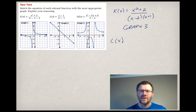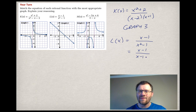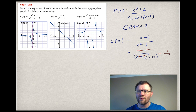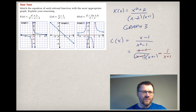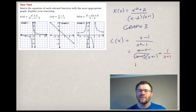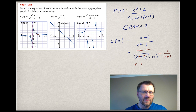l(x) has (x minus 1) on the top, and x squared minus 1 on the bottom. We can factor the bottom as (x minus 1)(x plus 1), since that's a difference of squares. Then x minus 1 cancels, leaving 1 over (x plus 1). That gives no x-intercepts, a vertical asymptote at x equals negative 1 — corresponding to graph number 1 — and a hole at x equals positive 1, where the two factors cancelled.